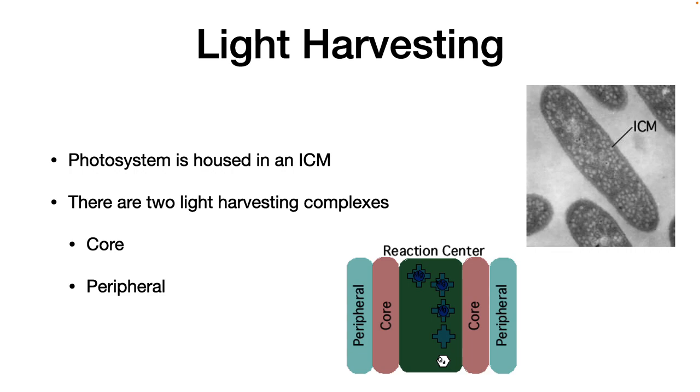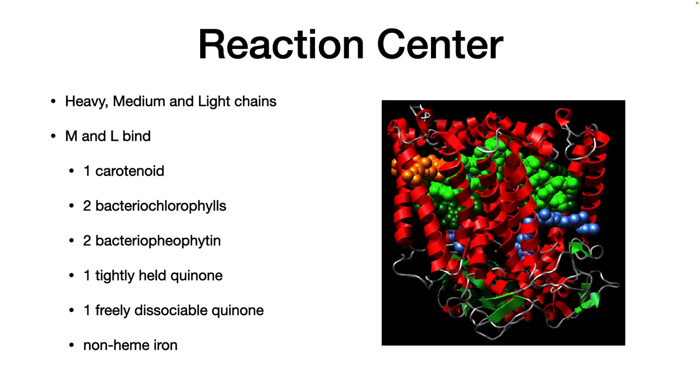They create this extra surface area to house the large number of light harvesting complexes needed to carry out photosynthesis. There are two protein complexes in purple bacteria. A core system that is always present in a fixed ratio of nine complexes per reaction center, and a peripheral light harvesting complex whose number varies depending upon the light intensity. Under low-light conditions, more peripheral LHCs are formed per reaction center. The reaction center consists of three polypeptides, a heavy, medium, and light chain. Bound to the M and L chains are one carotenoid, two bacterial chlorophylls, two bacterial pheophyton, one non-heme iron, one tightly held quinone, and one freely dissociable quinone. The freely dissociable quinone is the one that escapes the reaction center after being reduced and it interacts with cytochrome BC1 complex.